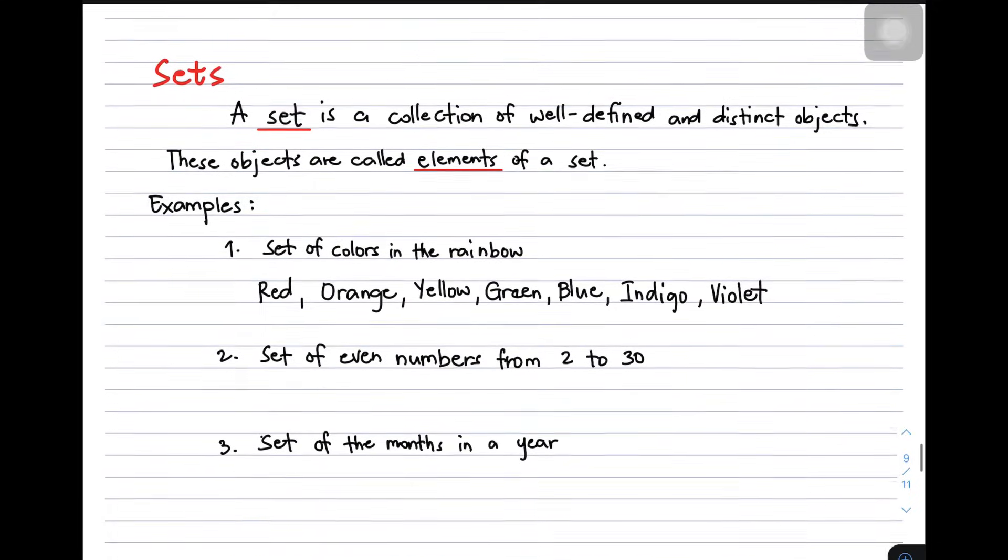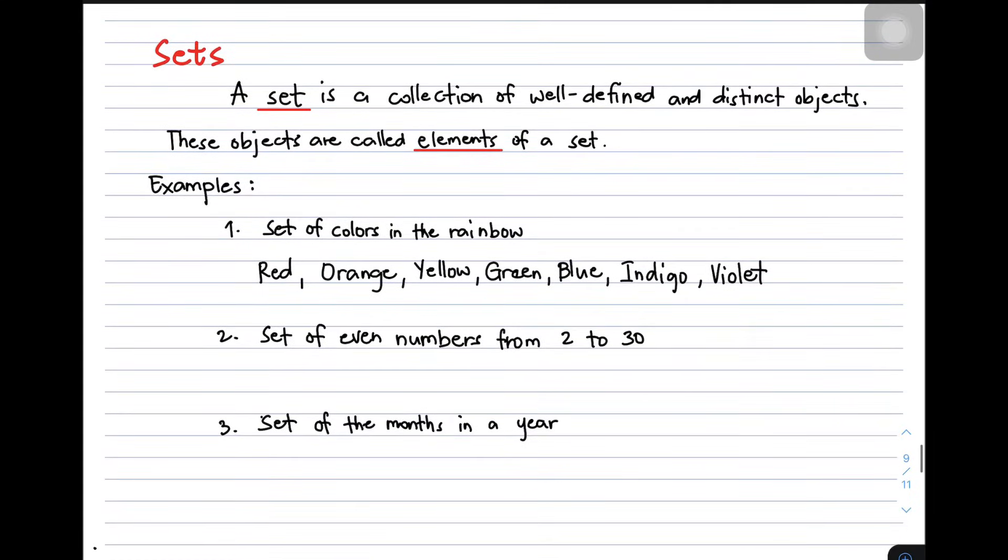We have here the definition of sets. A set is a collection of well-defined and distinct objects. These objects are called elements. So we have here two words that we should remember. The set is a collection of well-defined and distinct objects.